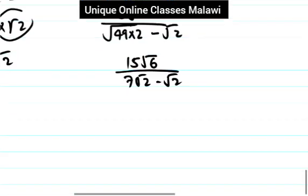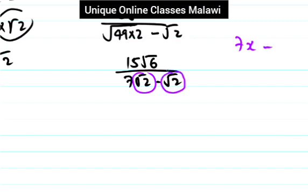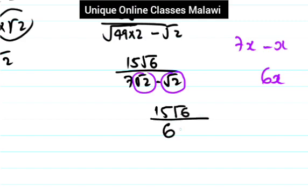You can subtract the like terms in the denominator. We have 7 times the square root of 2 minus the square root of 2. If you move the x — treating the square root of 2 as a common factor — you get 7x minus x, which is 6x. So the denominator becomes 6 times the square root of 2. Now we have 15 times the square root of 16, divided by 6 times the square root of 2.